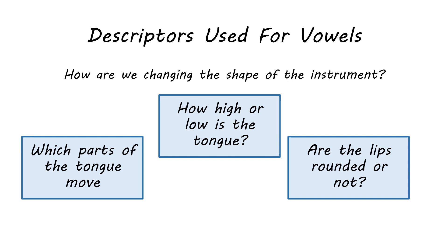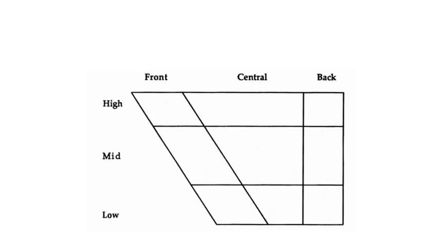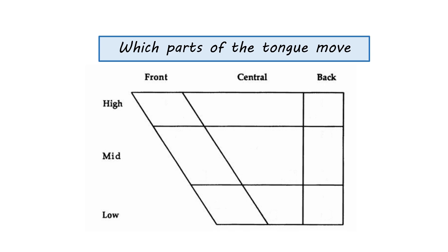And these are the same descriptors that we use to describe sounds in the International Phonetic Alphabet because as we heard before we use production in order to describe the letters. So on this chart we can make a chart that compares which parts of the tongue move, so this is are we moving the front or the back of the tongue to how high or low does the tongue move?